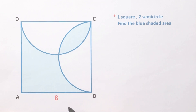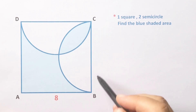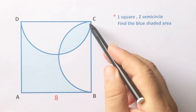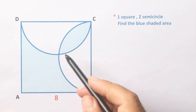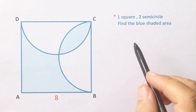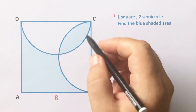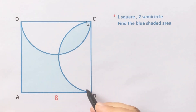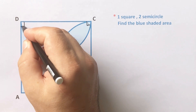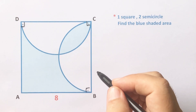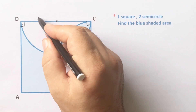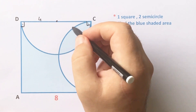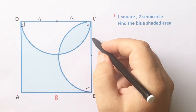Hello everyone. In this video we have one square and two semicircles. This length is given as 8 units. These angles are 90 degrees because of the square. If the side is 8 units, let's call the center here — so the radius of the semicircle equals 4 units.